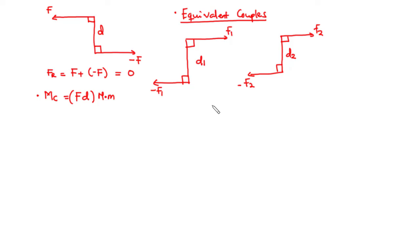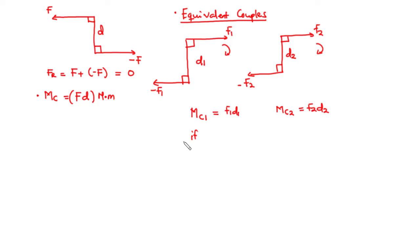Let's find the couple moment for each couple. For the first couple, MC1 equals F1 times D1, taking the clockwise direction. For the second couple, we have F2 times D2. Two couples are said to be equivalent if F1·D1 equals F2·D2. If the values on both sides are equal, they have the same magnitude, and if the polarity is also the same, they have the same direction.